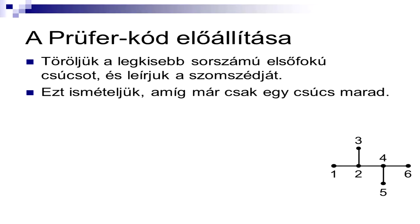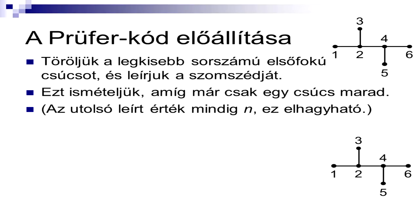Mindig töröljük az elsőfokú csúcsok közül a legkisebb sorszámot. Fában mindig van elsőfokú csúcs. És amit letöröltem, megnézem, hogy melyik volt az ő szomszédja, és a szomszédjának a sorszámát leírom. Ha fáról elsőfokú pontot leveszek az éllel együtt, akkor továbbra is fa marad, és erre ismételgetem azt. Egészen addig, amíg a végén már csak egy csúcs marad. Azt meg lehet gondolni, hogy igazából az utolsó él, az biztos a legnagyobb sorszámú pontot fogja egy másikkal összekötni. A legnagyobb sorszámú ponthoz biztos nem fogok menet közben nyúlni. Tehát igazából az N-1 élt, amikor elhagyom, akkor mindig egy N-es értéket fogok a végére leírni. Ez nem hordoz önmagában információt.